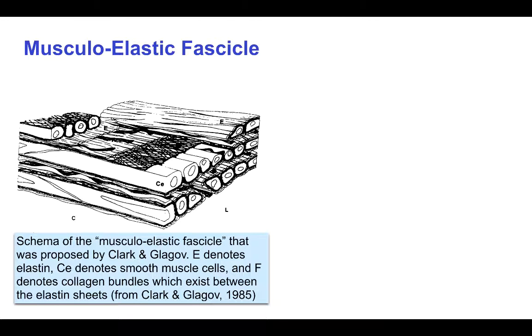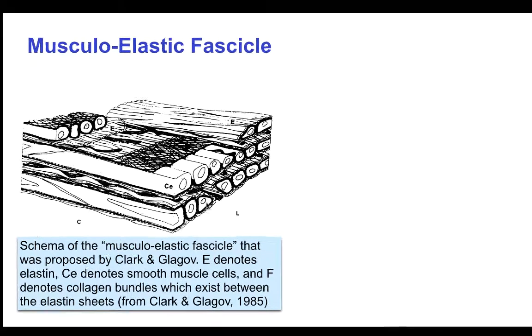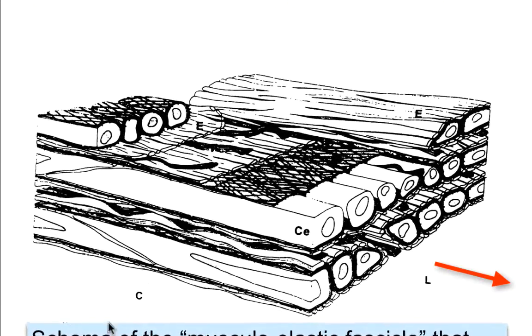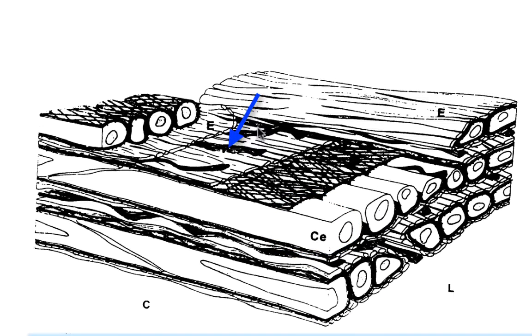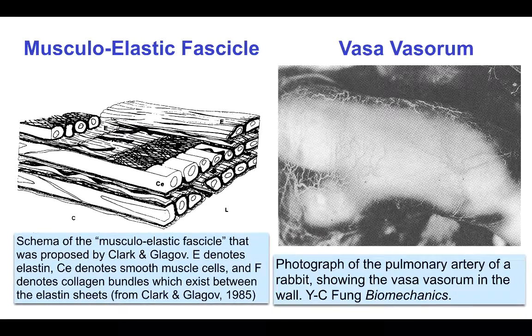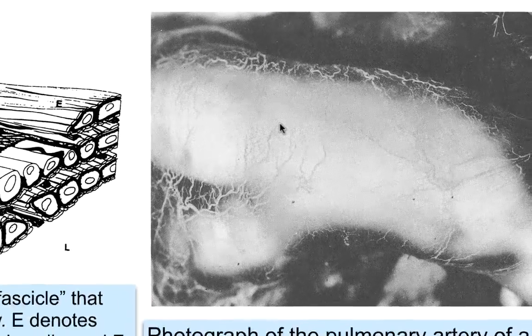The basic functional unit of artery walls is referred to as the musculoelastic fascicle. This is the longitudinal direction of the vessel, and this is the circumferential direction. E here refers to elastin, and CE refers to the smooth muscle cells. In addition, these black structures are collagen bundles between the elastin sheets. Here we see on the right a photograph of the pulmonary artery of a rabbit, showing the vasovasorum in the adventitial layer, which has been cleared so that the network of small vessels in the blood vessel wall itself can be seen.